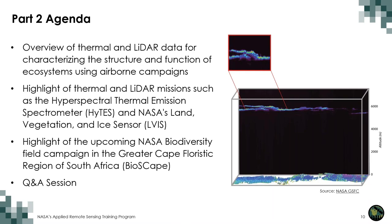Moving on to the new material we'll cover today, we will start with an overview of thermal and LIDAR data for characterizing the structure and function of ecosystems using airborne campaigns. We will highlight thermal and LIDAR missions such as the Hyperspectral Thermal Emission Spectrometer known as HyTES and NASA's Land Vegetation and Ice Sensor known as LVIS. Then Adam Wilson will highlight the upcoming NASA biodiversity field campaign in the Greater Cape Floristic Region of South Africa. We will then wrap up this session with questions and answers.